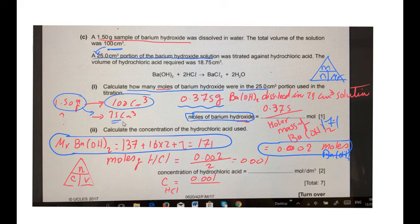We titrated the 25 cm³ of barium hydroxide against hydrochloric acid. The volume of hydrochloric acid used was 18.75.